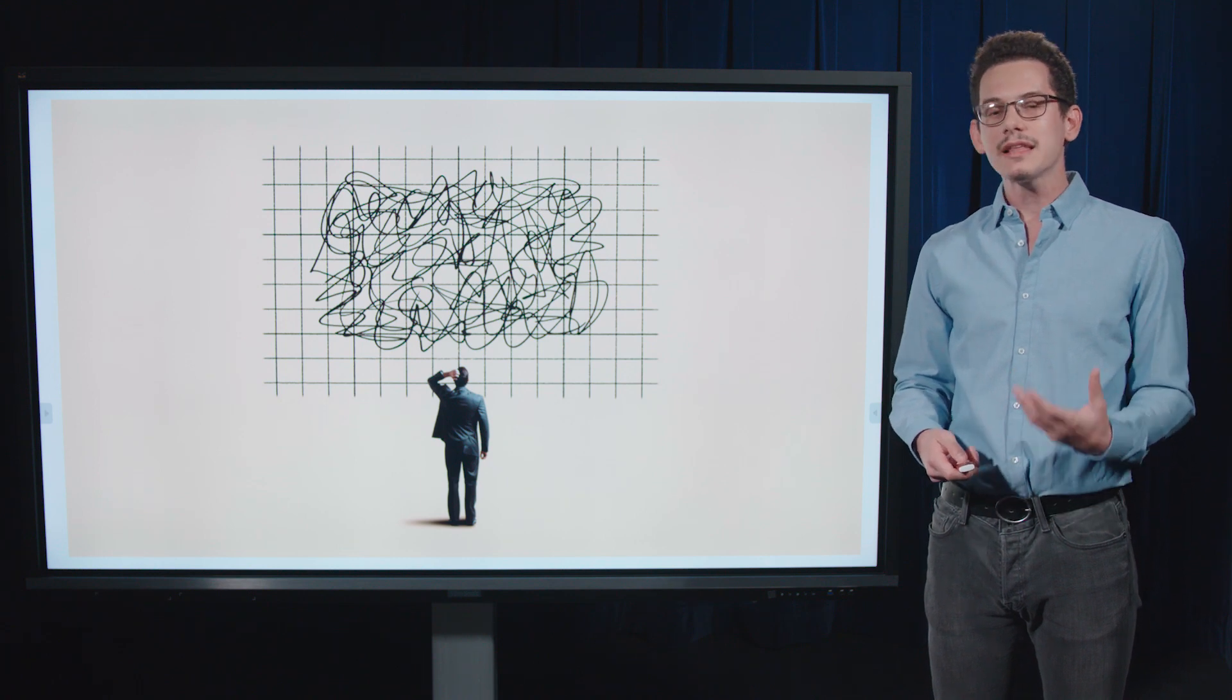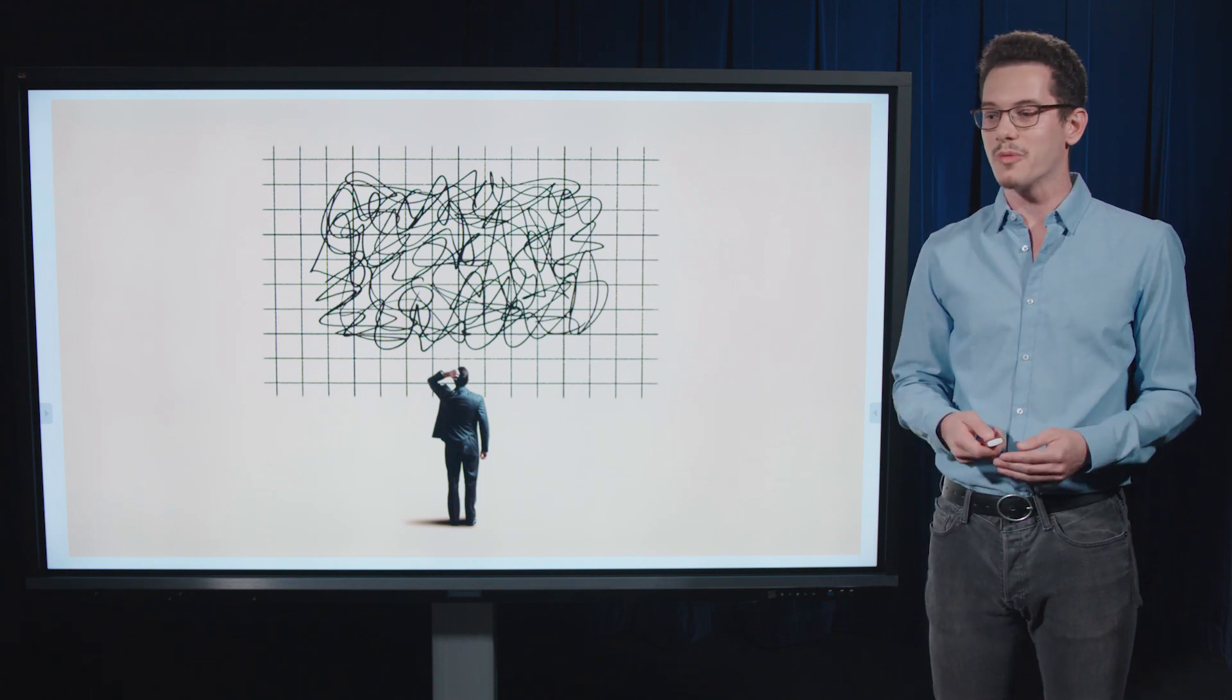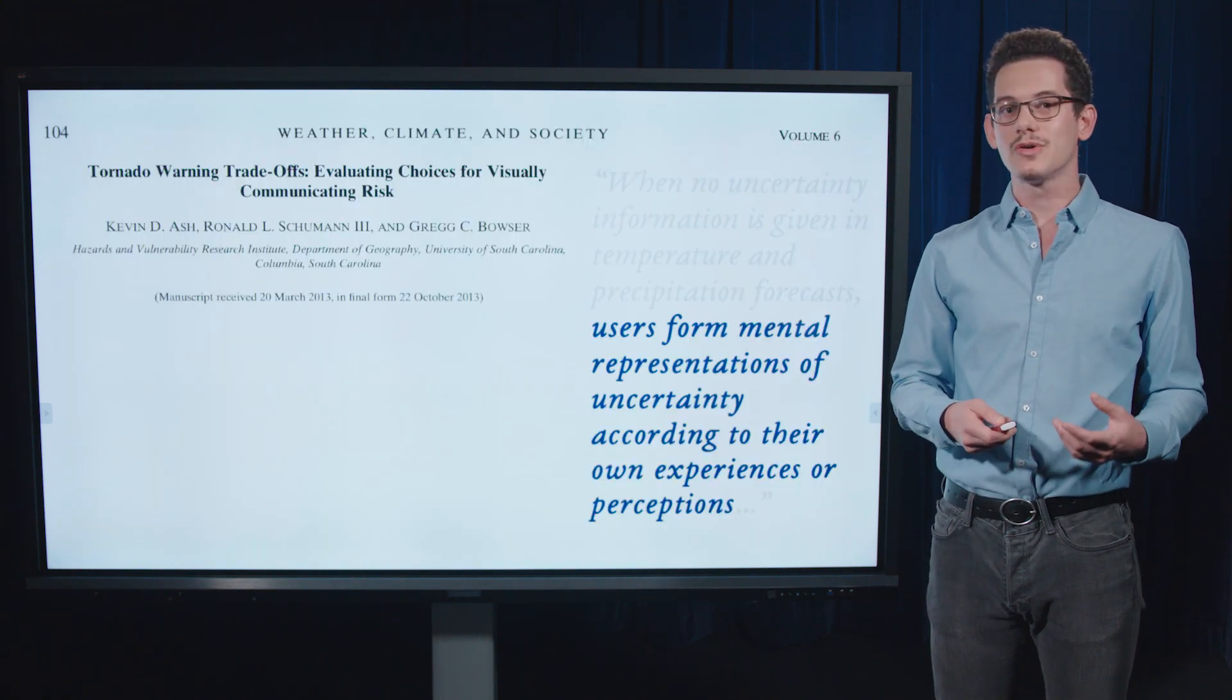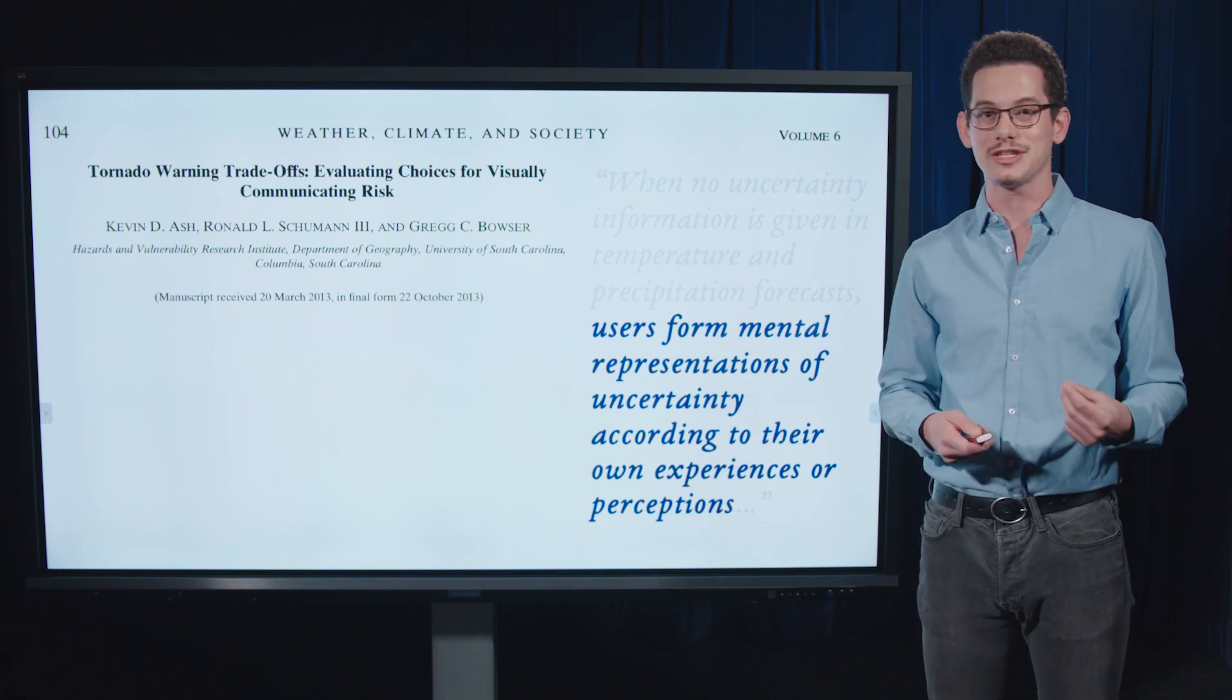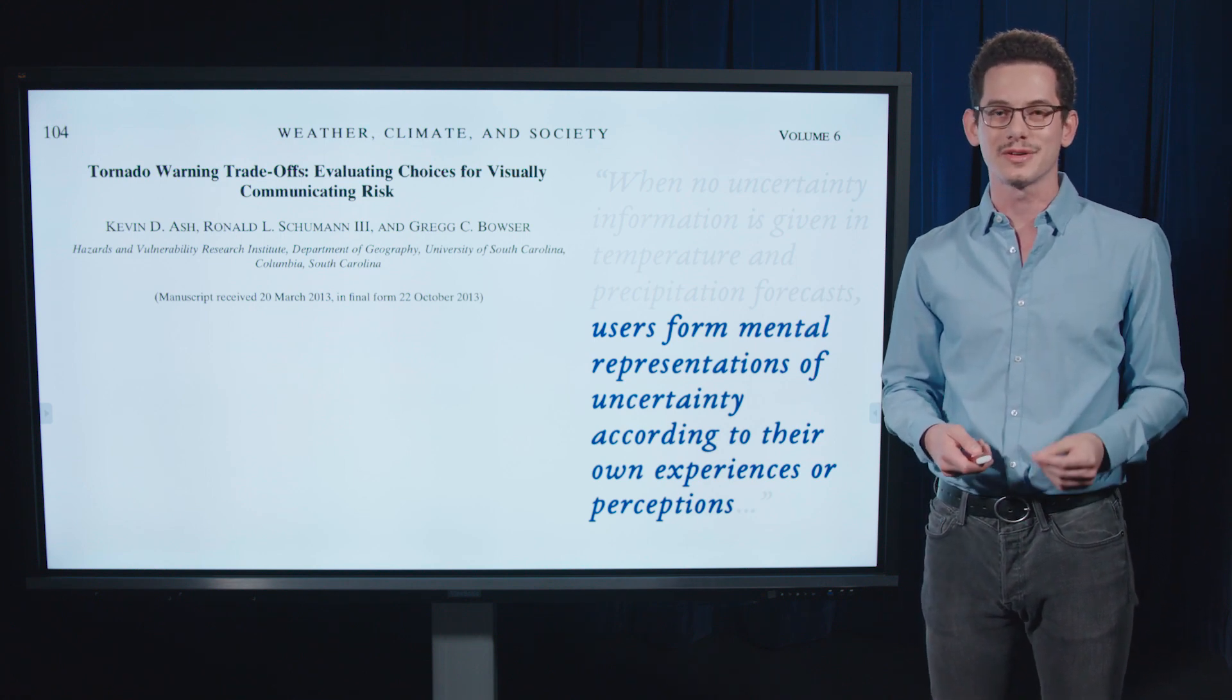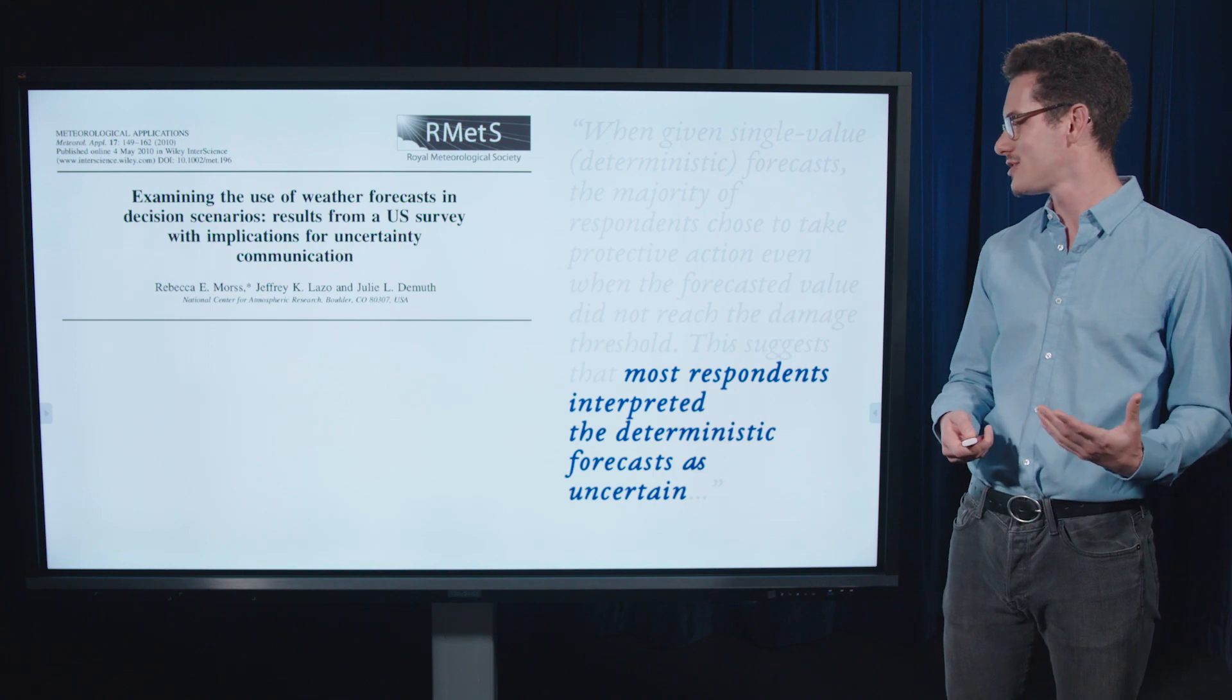And we might think it's a good idea to omit that uncertainty from the forecast product entirely. Because we might think that users wouldn't understand that. It turns out this could be a bad idea for several reasons. So, research has found that users form mental representations of the uncertainty in a map according to their own beliefs, according to whatever's in their own head, in the absence of uncertainty depicted on the forecast map.